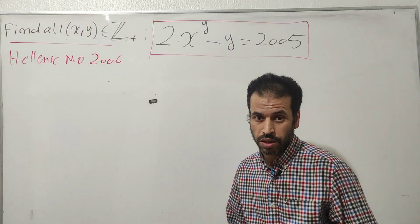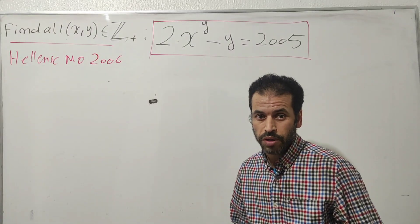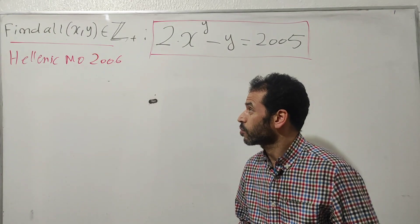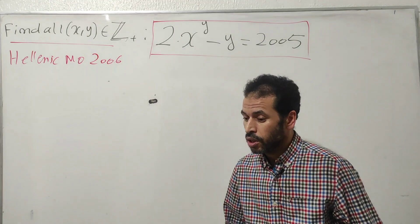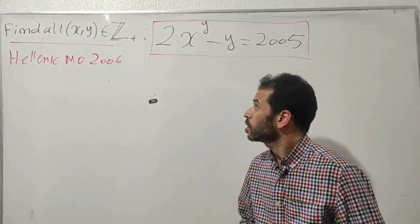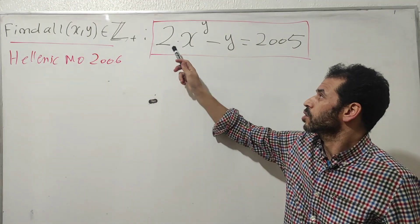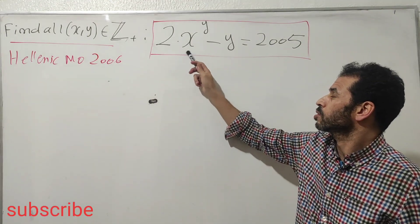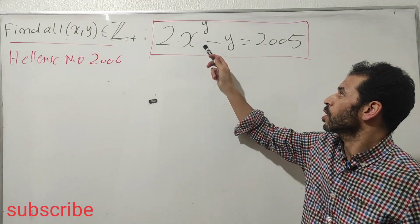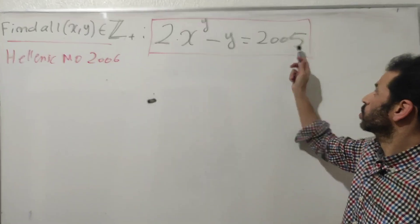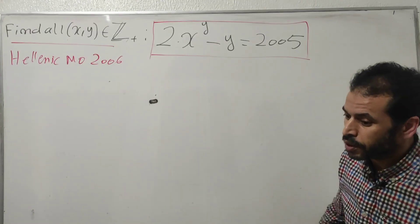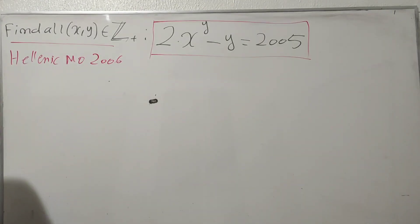In today's video, we have a nice number theory problem from the Hellenic Mathematics Olympiad 2006. We get this equation: 2 times x to the y, minus y, equals 2005.